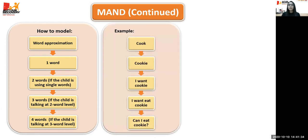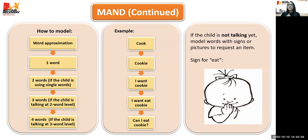If the child is not talking, we model with either signs or pictures to request, depending on each child. The sequence for requesting starts with the child's favorite objects — food or toys — then activities like tickles, then actions like 'open,' then attention — getting the child to call that person by name or tap the adult, then missing items where we purposely create the opportunity for the child to request, and finally information — WH questions like 'where is the ball?' or 'what is this?'